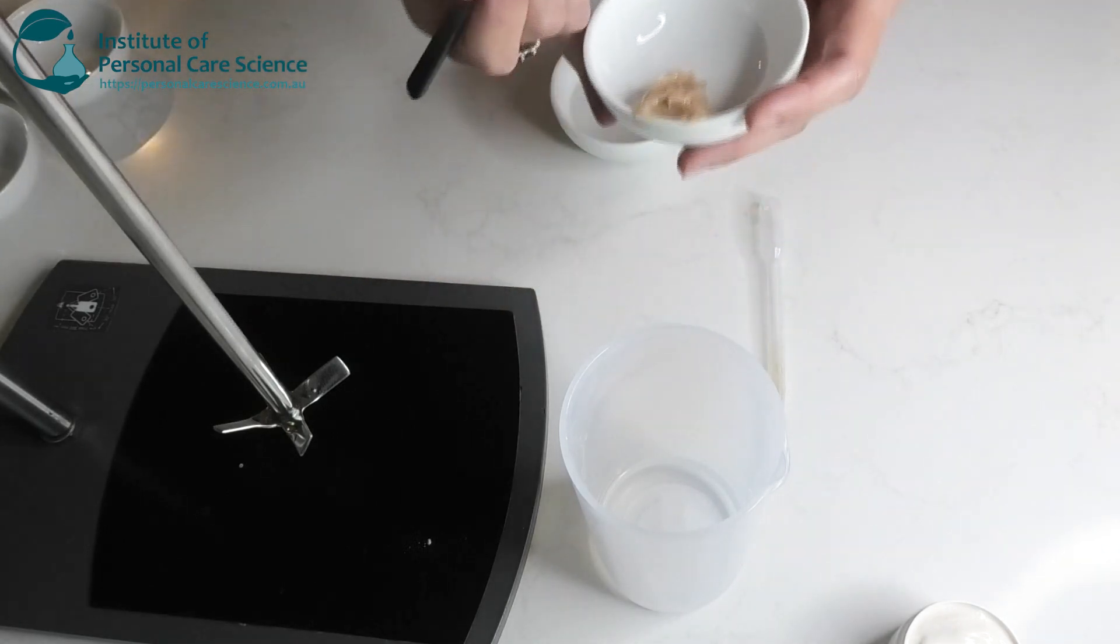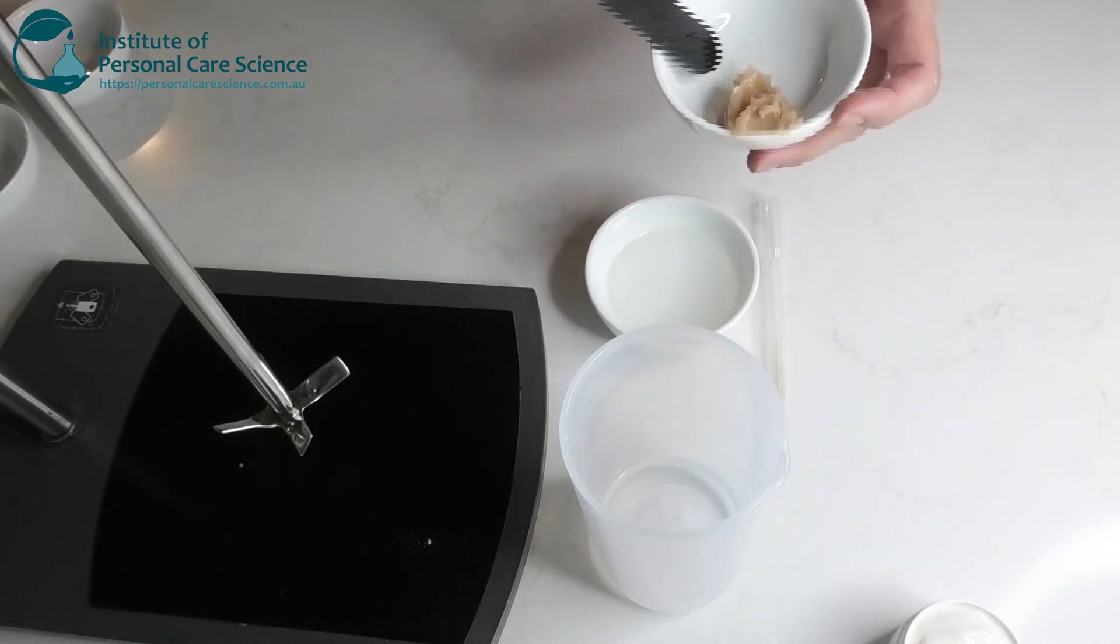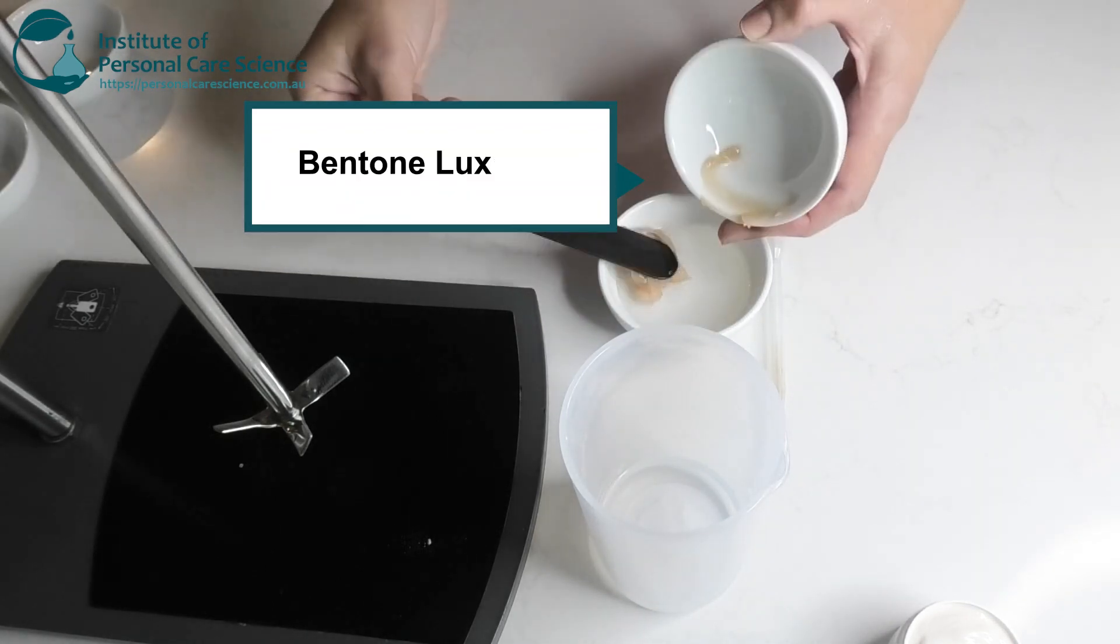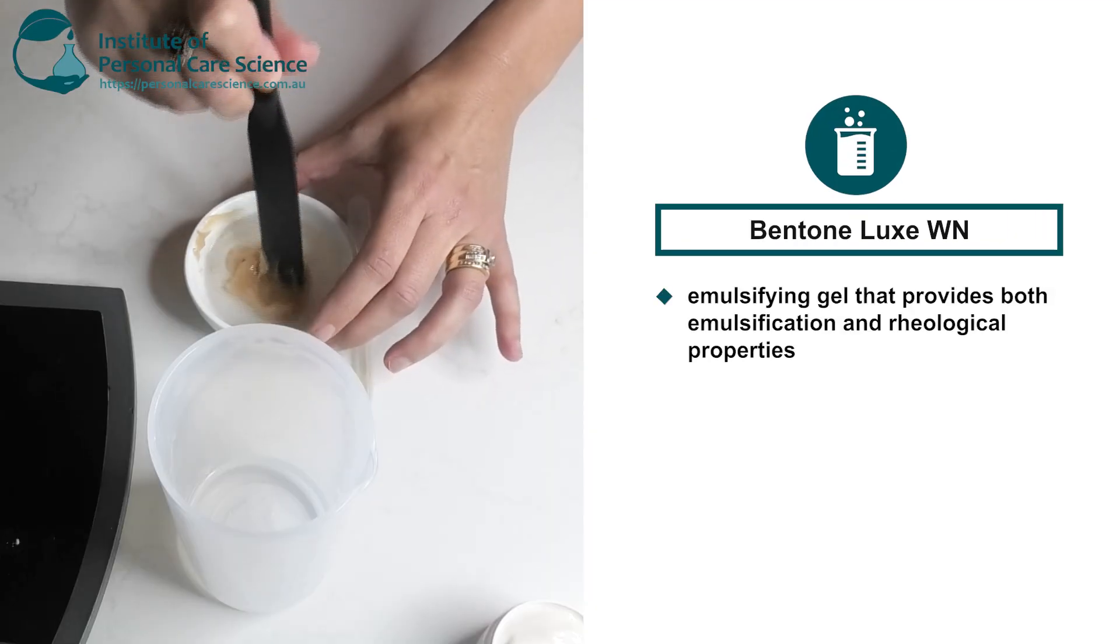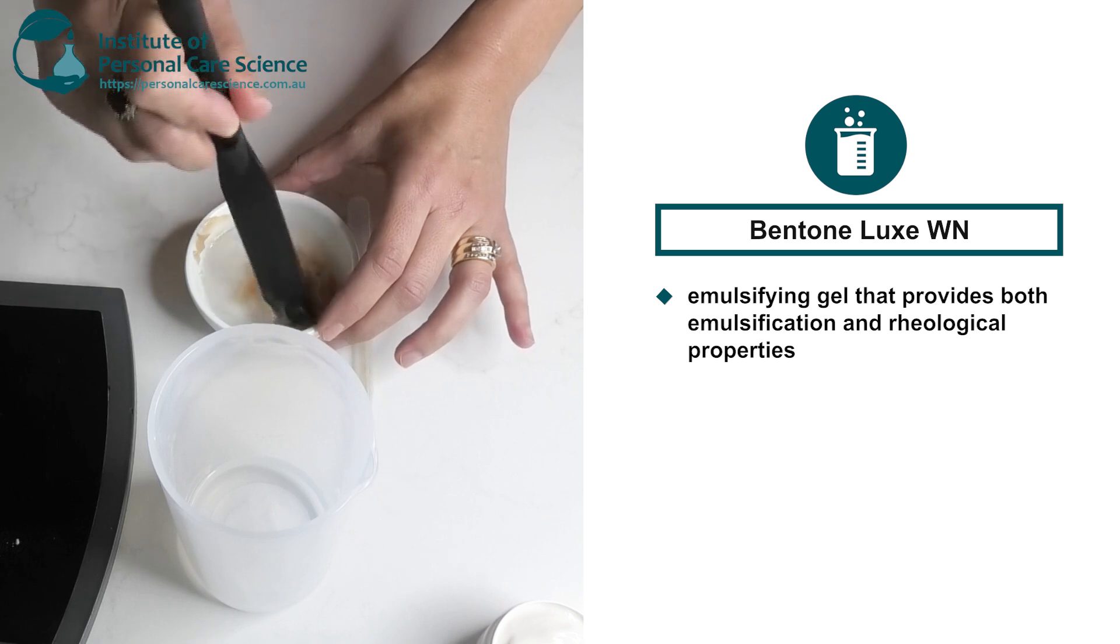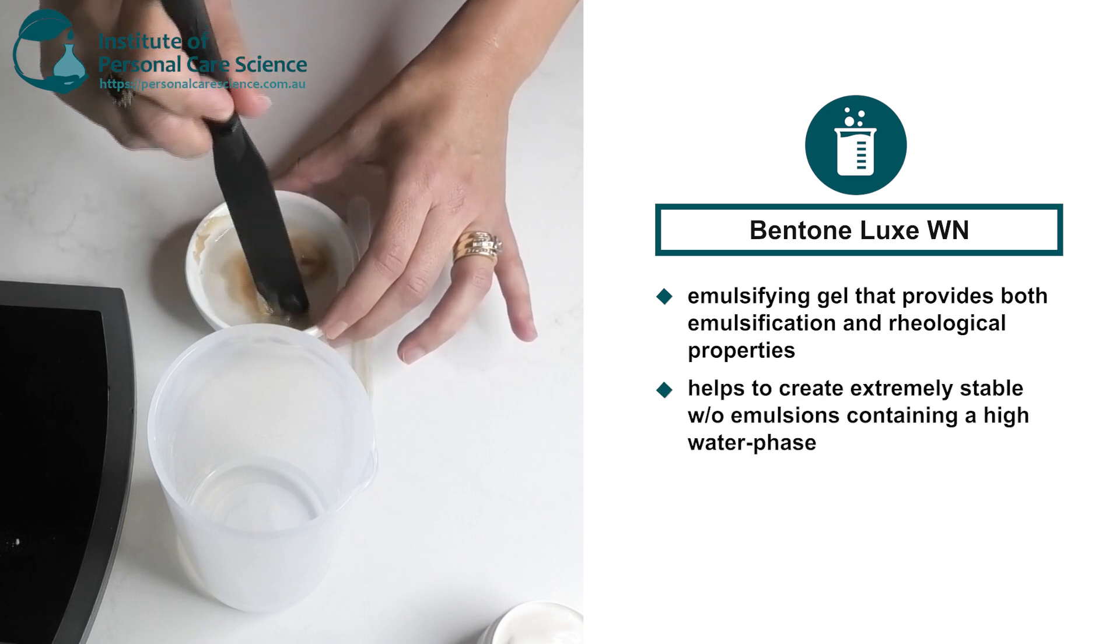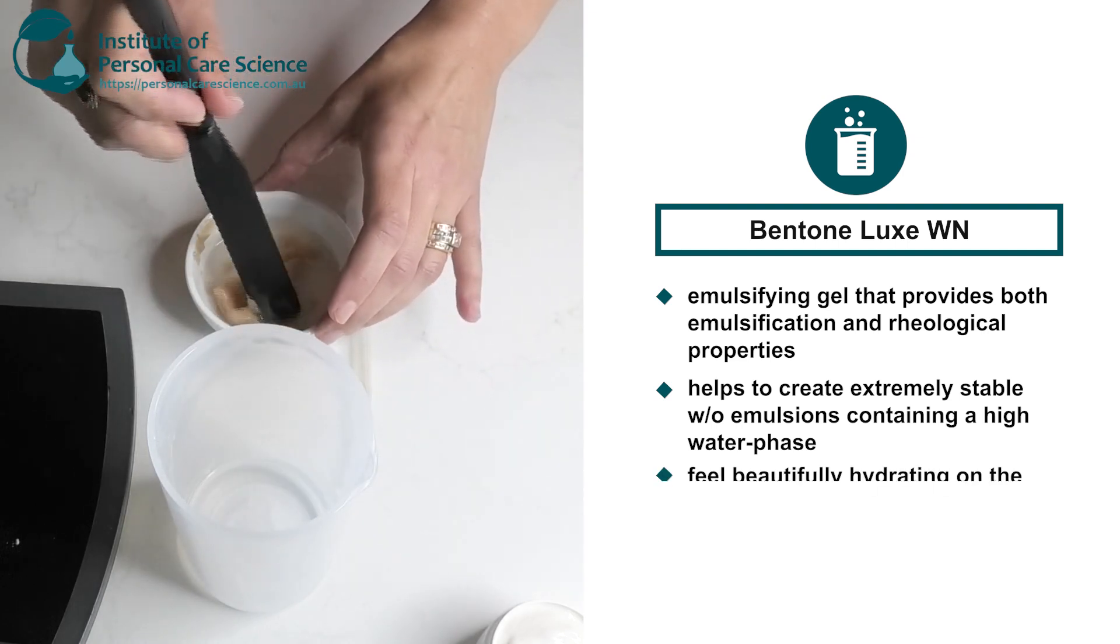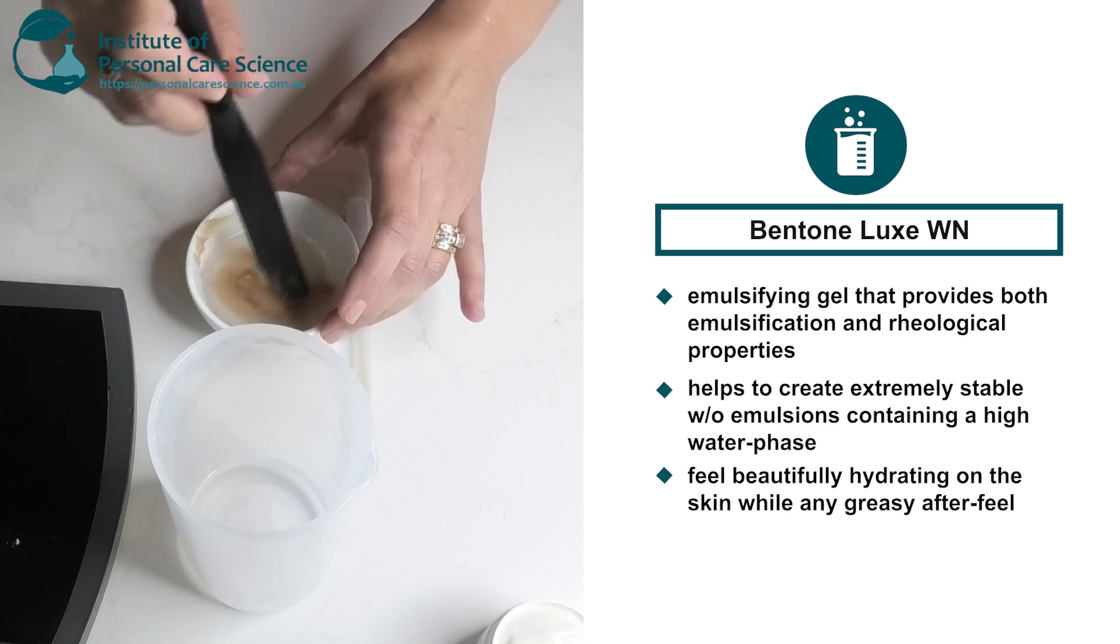And now for the star of the show. This is Bentone. So Bentone is an emulsifying gel that provides emulsification and rheology properties. It helps to create an extremely stable water in oil emulsions containing high water phase, like the one that we're doing today. It also feels beautifully hydrating on the skin without any greasy after feel.